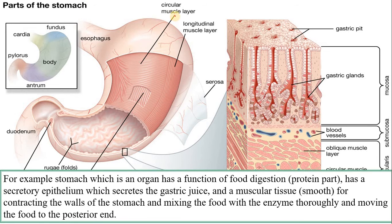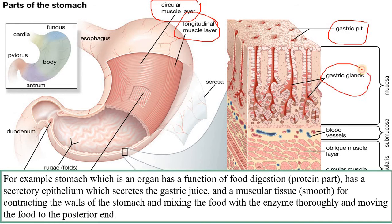Stomach کے example میں آپ دیکھ سکتے ہیں کہ اس کے اندر muscle tissues ہیں، جو پہلے tissues کی types میں پڑھے تھے۔ اس کے علاوہ gastric pits اور gastric glands ہیں، جو secretary tissues یا glandular tissues ہیں۔ تو دو قسم کے tissues ہیں جو stomach کو بنا رہے ہیں، اور یہ خوراک کی mixing اور secretion کے لیے use ہوتے ہیں۔